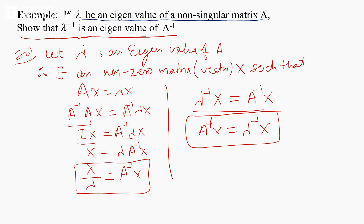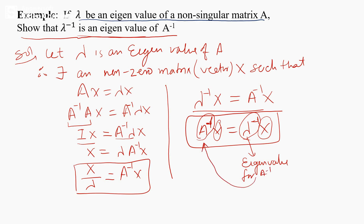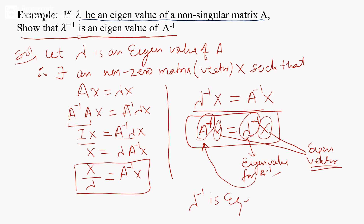By the definition of eigenvalue — a matrix multiplied by a vector gives a scalar multiple of that same vector — we conclude that λ⁻¹ is an eigenvalue of A⁻¹, and x is the corresponding eigenvector. Thus we have shown that λ⁻¹ is an eigenvalue of A⁻¹. Continue to the next lecture.